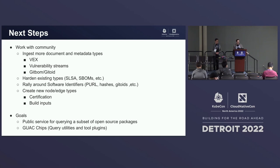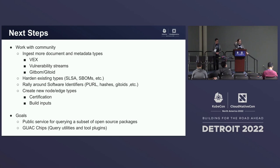We also want to help harden existing types by working with the community on SLSA — I'm a steering committee member of SLSA — and with maintainers on some SBOM specifications. We're figuring out what we can do to ensure all these identifiers have interoperability between them. We also want to rally around software identifiers and find ways — even if through mappings — to make that easier.